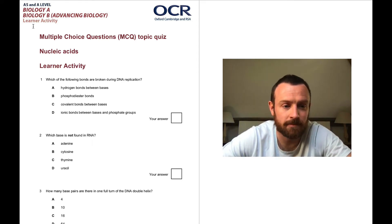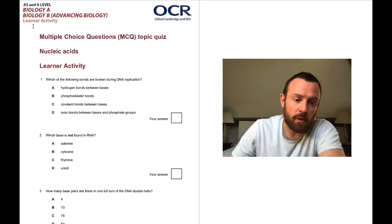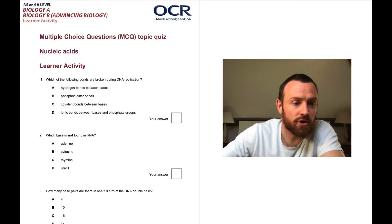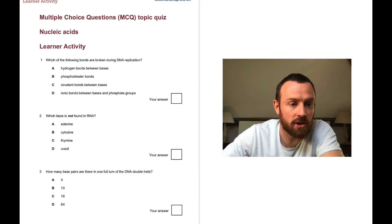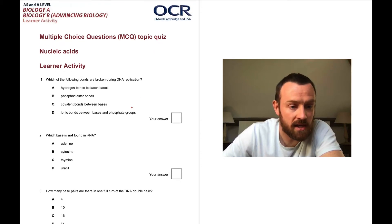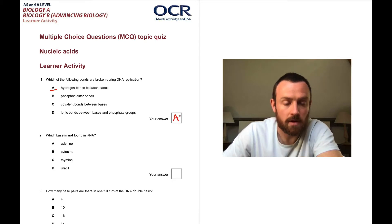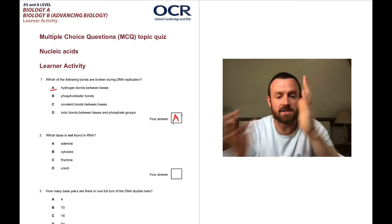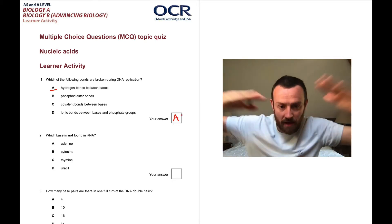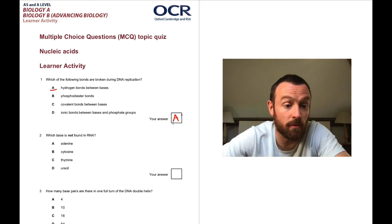Let's get started. Question one: which of the following bonds are broken during DNA replication? This is the hydrogen bond between bases. Yeah, so it's the unzipping - the helicase breaks the hydrogen bonds before it's replicated.